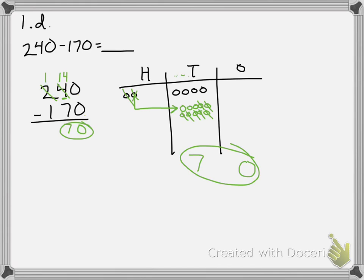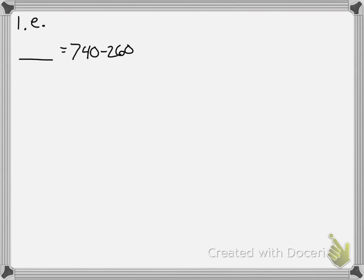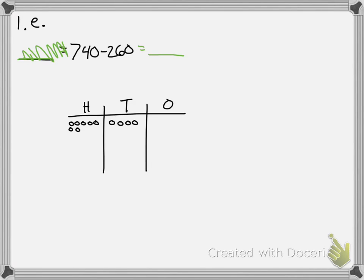For this next problem, they've just moved the equal sign and the answer space. I flip it back to its normal form and get started. I can't take six from my tens because I only have four, so I unbundle: one, two, three, four, five, six, seven, eight, nine, ten. I subtract six — leaving eight in the tens — then move to the hundreds and subtract two, leaving one and two. I end up with 480.